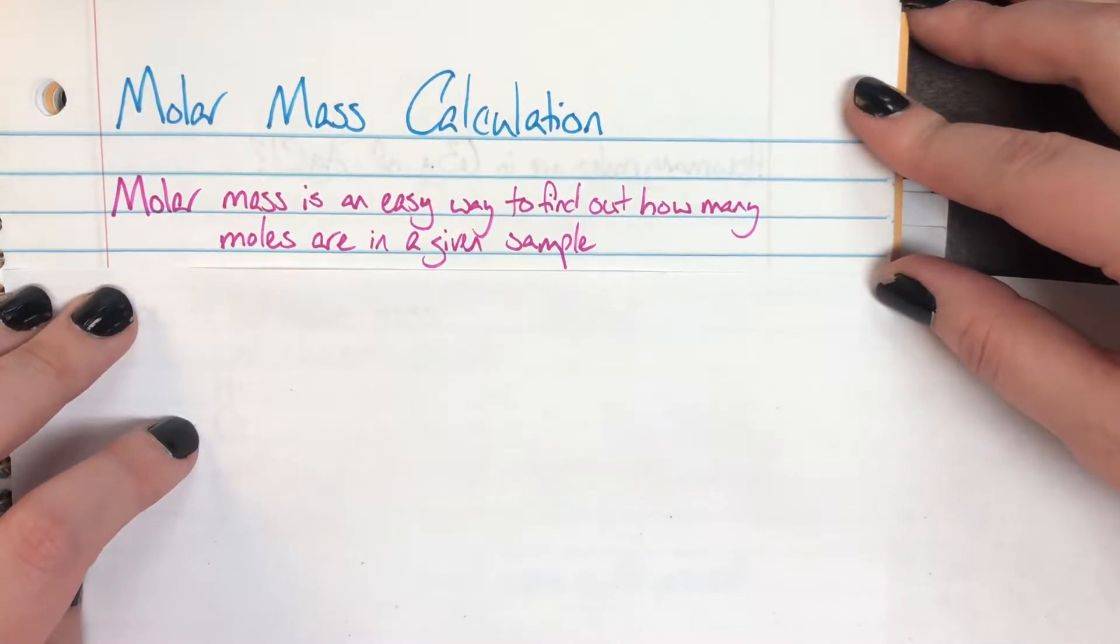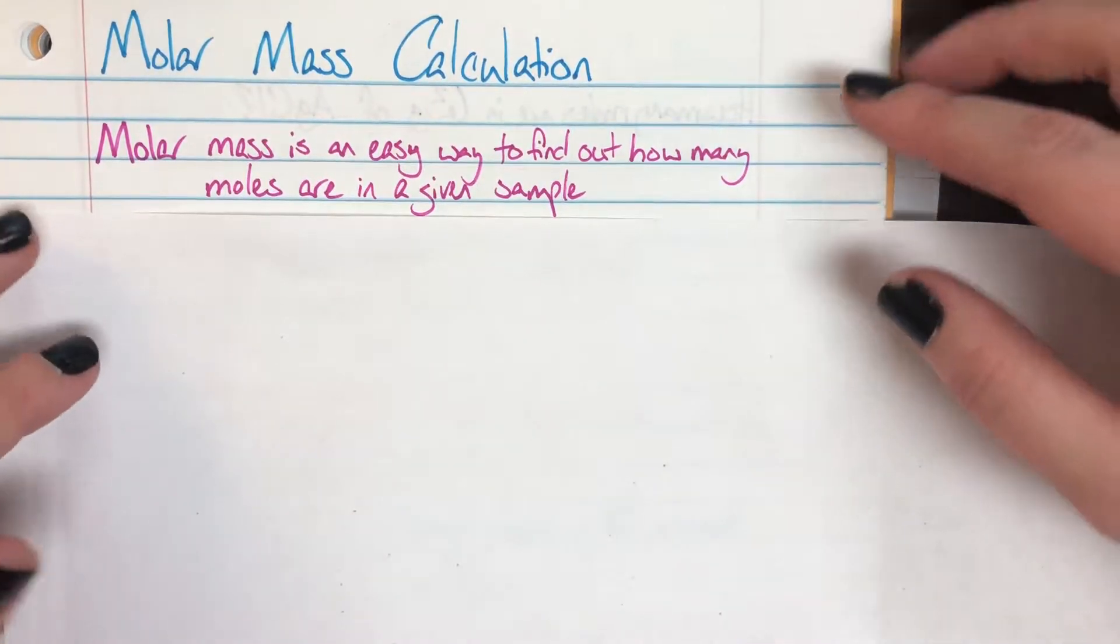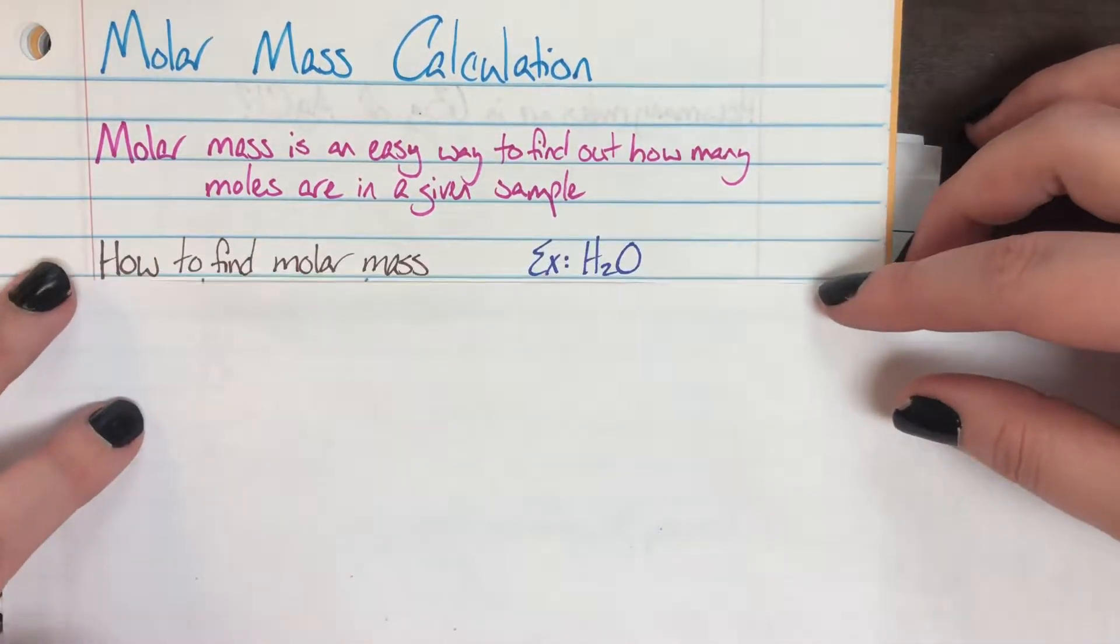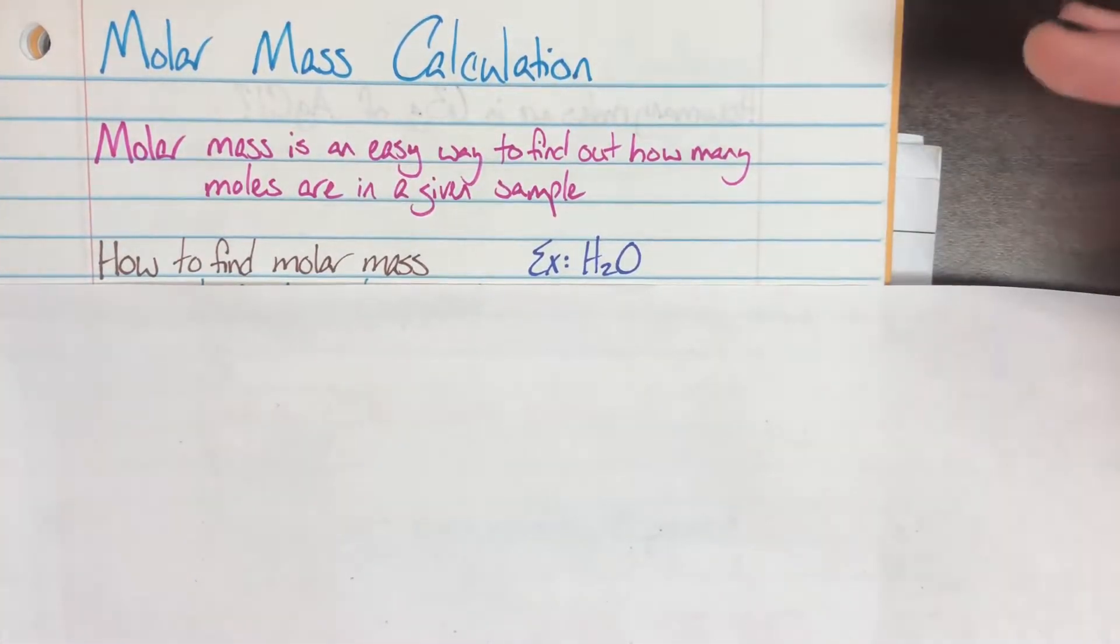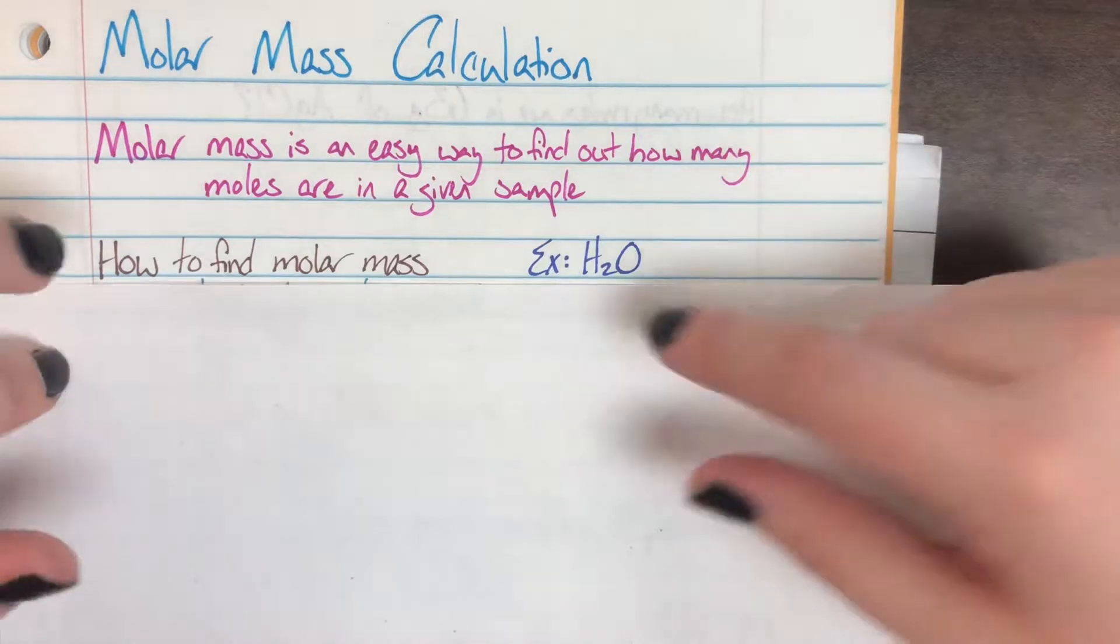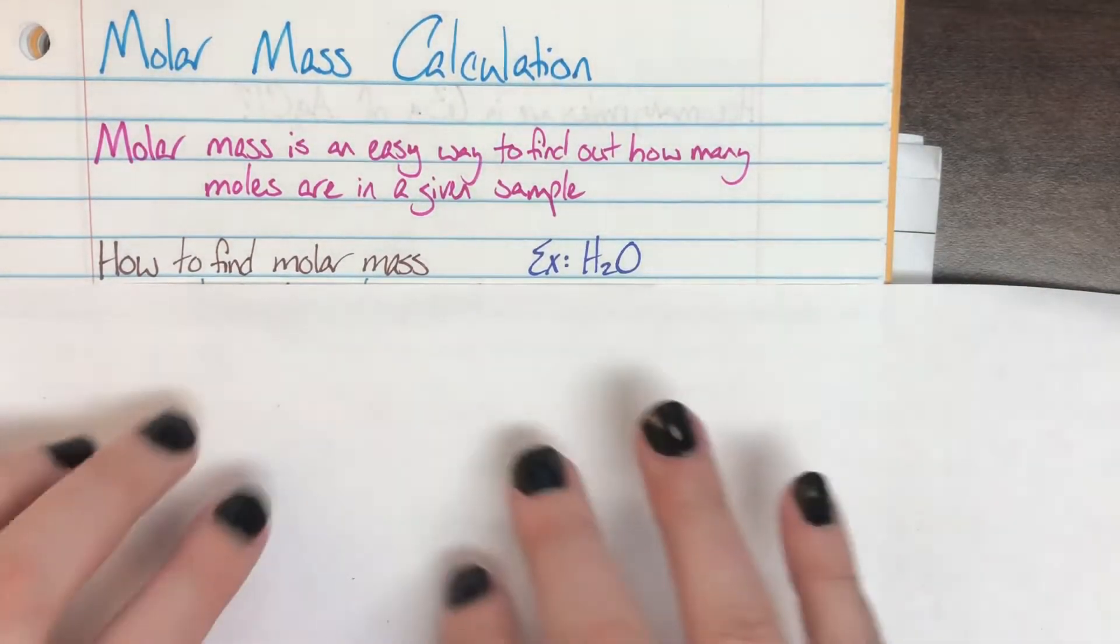And the very easiest way to learn how to calculate it is by doing an actual problem together. And so we're going to go ahead and we're going to calculate the molar mass of H2O. It's a pretty easy compound to deal with. There are only two elements, and we're just going to go through it together and see how we calculate it.